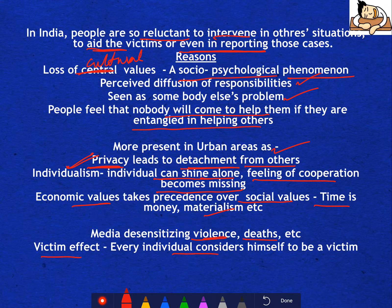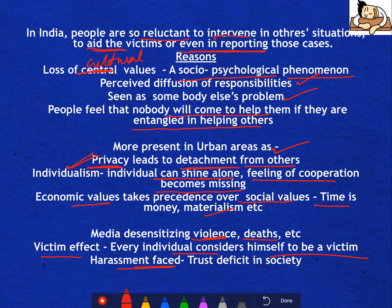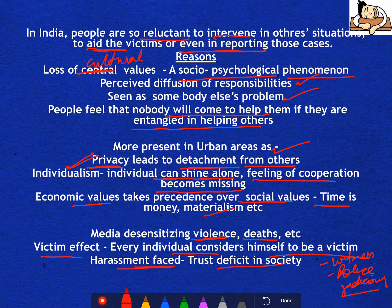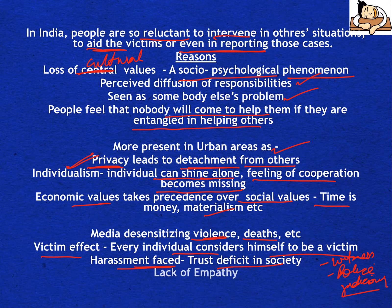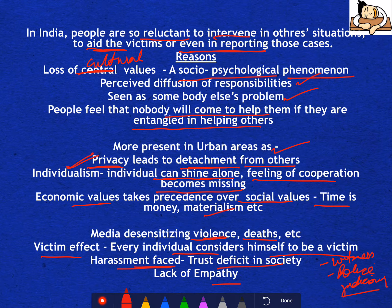The victim effect — every individual considers himself to be a victim. There is also the issue of harassment faced and trust deficit: if someone tries to help, witnesses are first hassled by the police and then hassled by the judiciary. So no one really wants to get involved because they feel it brings unnecessary hassles. This has actually happened because there's a lot of trust deficit in society. Lack of empathy is also majorly a reason why bystander apathy is such a common thing these days.